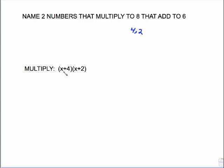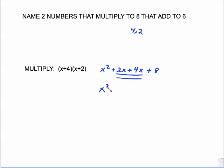Now I'm going to shift gears and go back to multiplying. We just FOILed out a problem like this a minute ago — let's do it again. x times x is x squared. x times 2 is 2x. x times 4 is 4x. And 2 times 4 is 8. Putting it all together, we get x squared plus 6x plus 8.